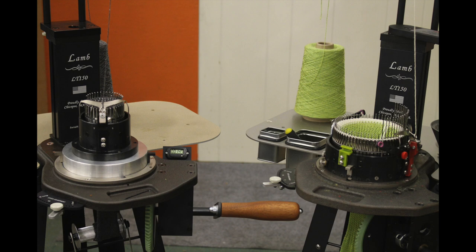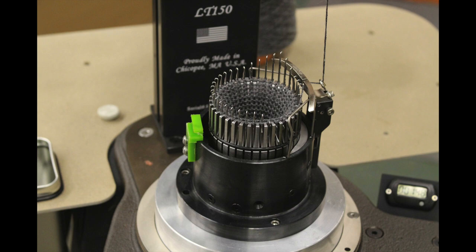This photo shows the standard LT150 on the right and the Little Lamb attachment on the left. Here's the 36 needle Little Lamb attached and knitting.